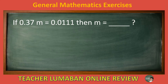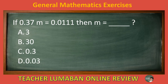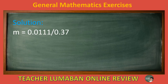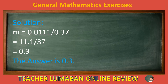If 0.37M equals 0.0111, then M equals blank. Letter A: 3. Letter B: 30. Letter C: 0.3. Letter D: 0.03. Choose the suitable answer in 5 seconds. 5, 4, 3, 2, 1. The correct answer is Letter C: 0.3. Solution: M equals 0.0111 over 0.37, equals 11.1 over 37, equals 0.3. The answer is 0.3.